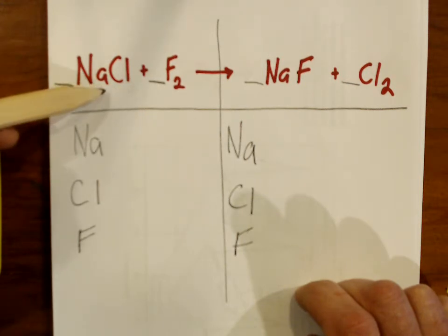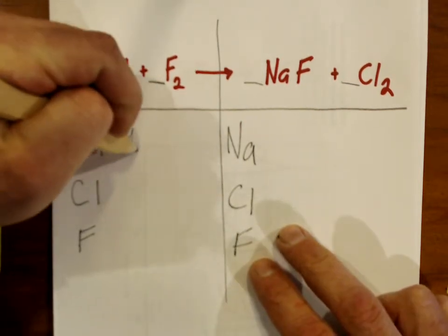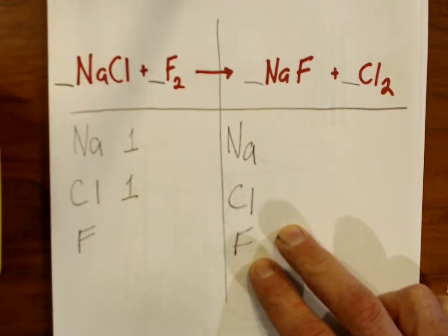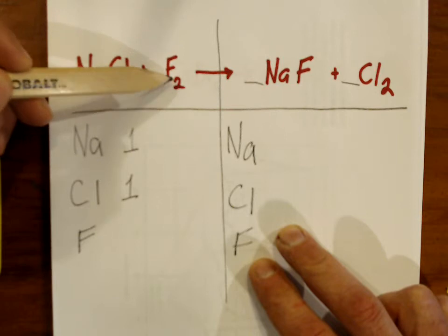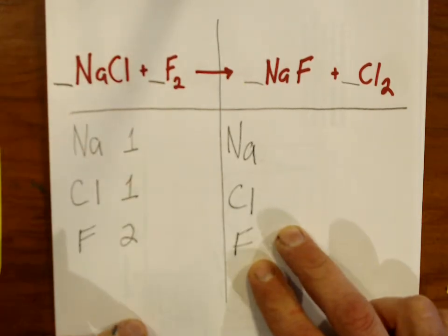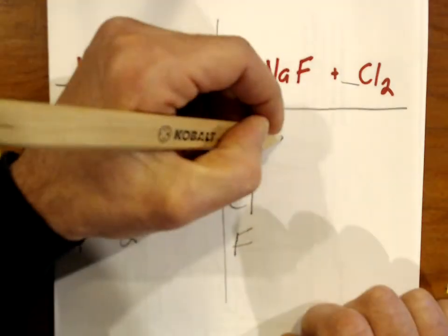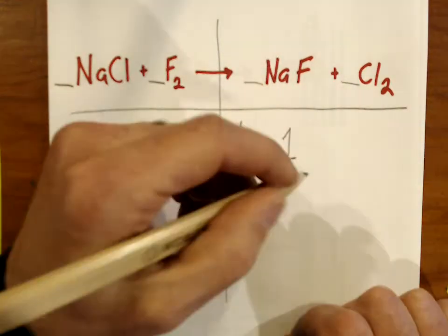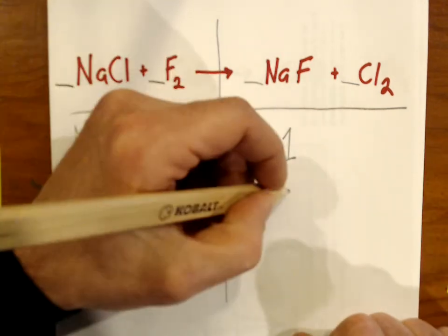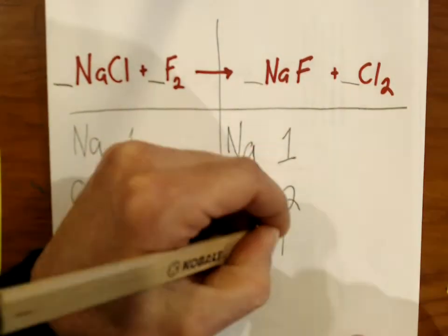I don't see any subscript after Na, so that means there's one sodium atom. No subscript after chlorine — one chlorine atom. There's a little two after the fluorine, so there's a total of two fluorine atoms. On the other side: one sodium atom, two chlorine atoms, and one fluorine atom.